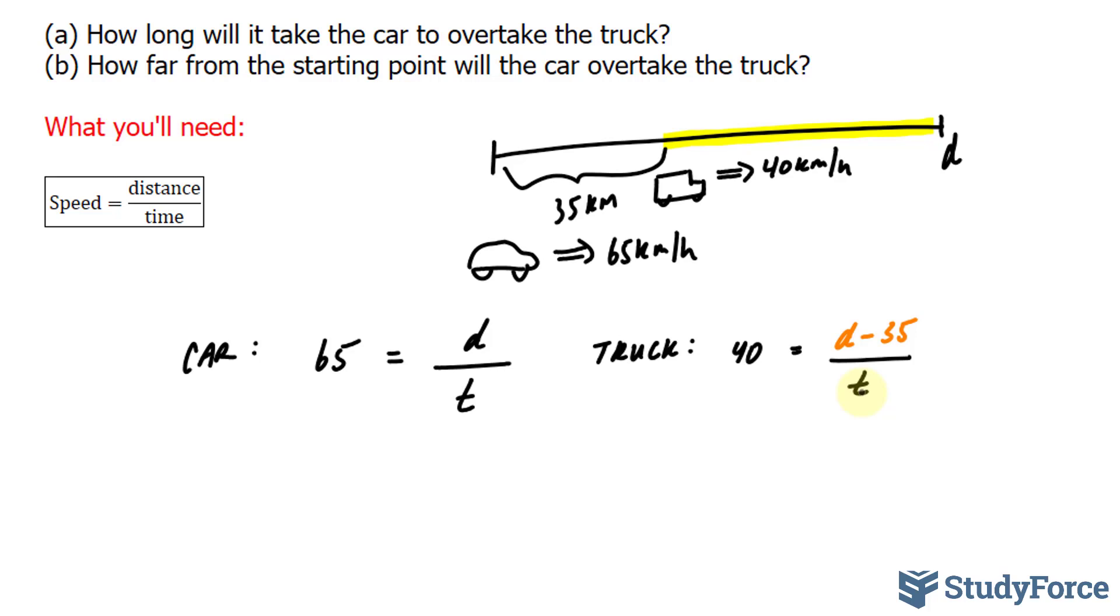Now the reason why it's D minus 35 is because this distance represents the amount remaining. This is 35, and this is something we don't know, what's highlighted. So let's call this region some arbitrary value A.